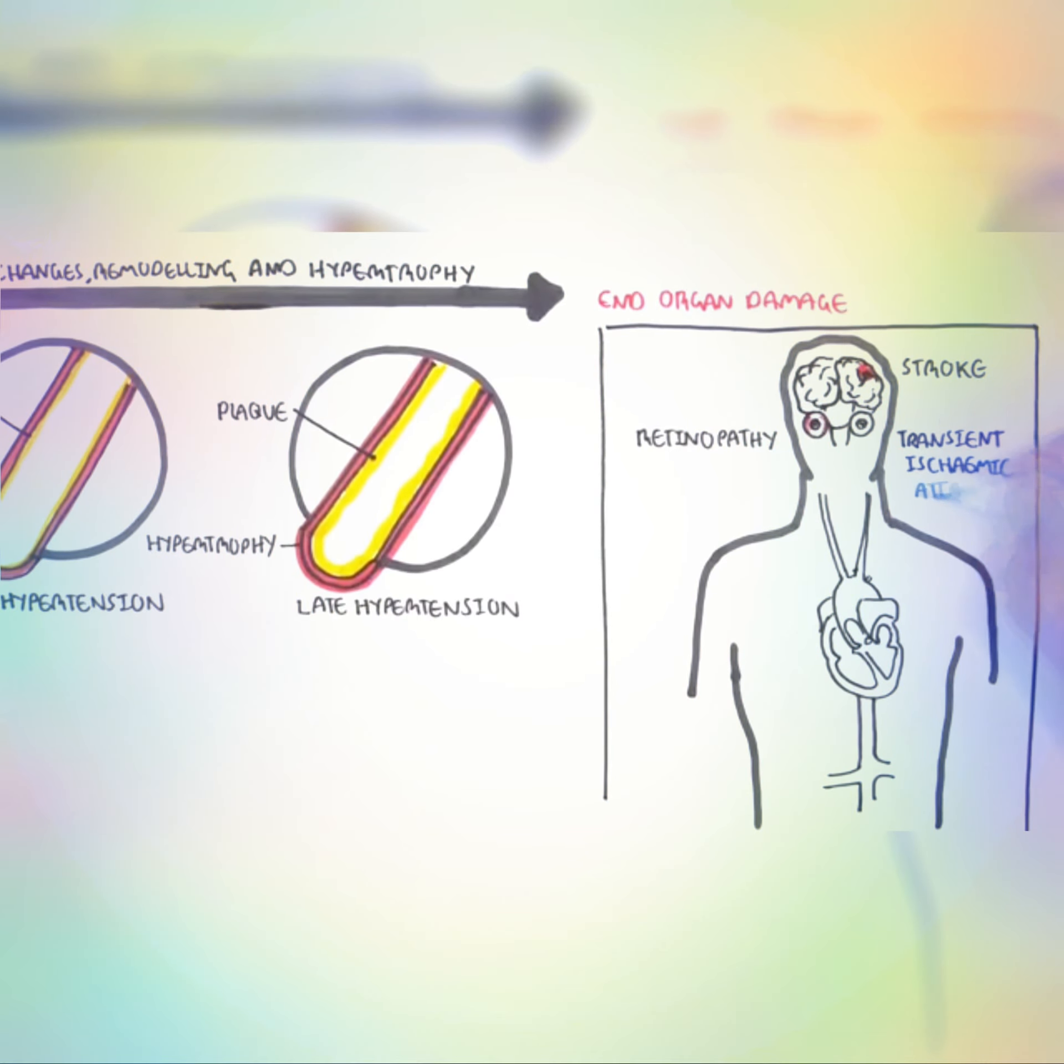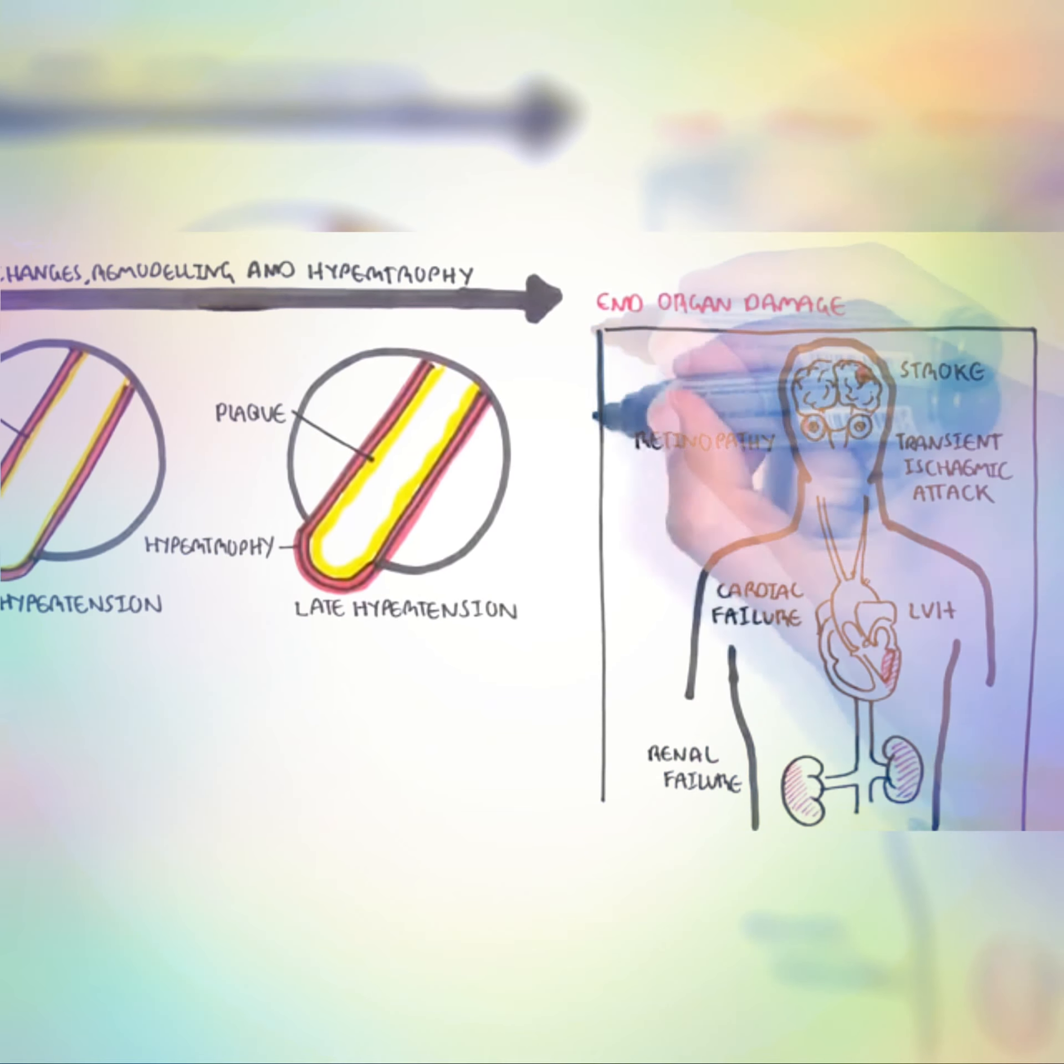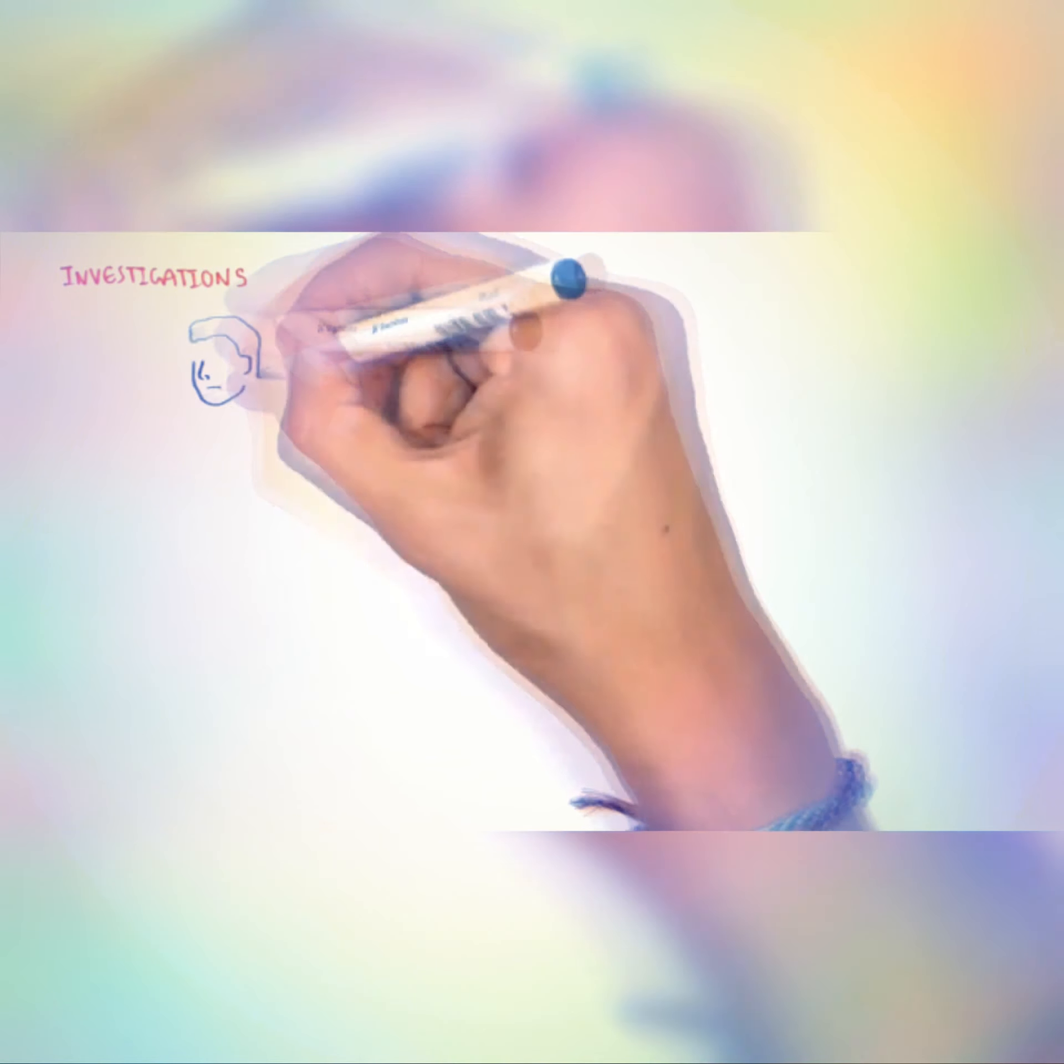These vascular changes can eventually result in end-organ damage, which includes stroke, retinopathy, transient ischemic attack, left ventricular hypertrophy, cardiac failure, and renal failure.